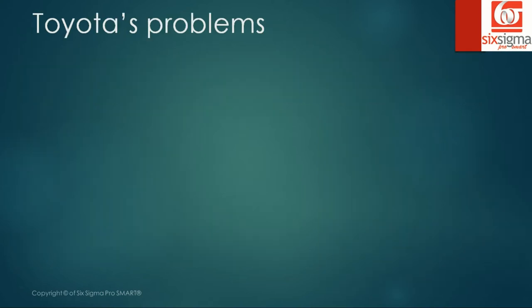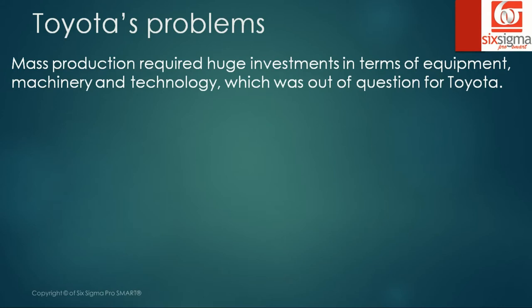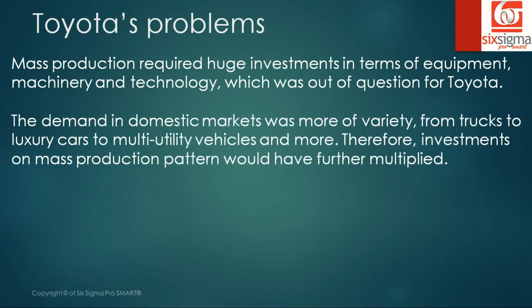But Toyota's problems were different. Mass production required huge investments in terms of equipment, machinery and technology, which was out of question for Toyota. The demand in domestic markets was more of variety — from trucks to luxury cars to multi-utility vehicles and more. Therefore, investments on a mass production pattern would have further multiplied, because you need a different assembly line for each product category.